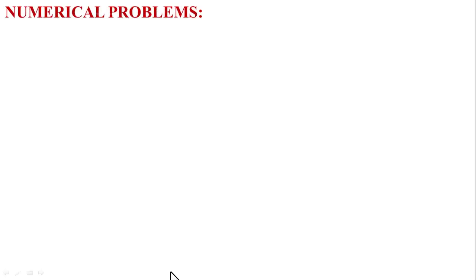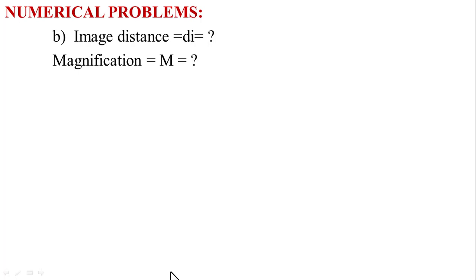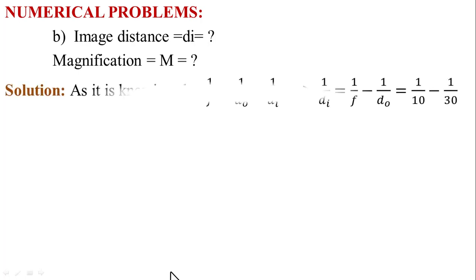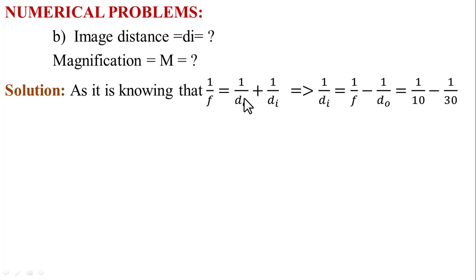Similarly, for part B, according to the statement, find the image distance Dᵢ and magnification M. Now we can find the solution. For part A, as it is known that 1/F = 1/D₀ + 1/Dᵢ. We can find Dᵢ, which implies that 1/Dᵢ = 1/F − 1/D₀.